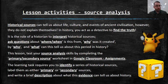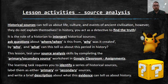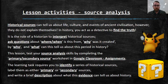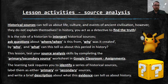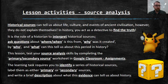I'll show you where that is in a moment. The learning task requires you to identify a series of historical sources — I've given you four examples, some primary and some secondary. You need to label each one as primary or secondary, then write a brief description — two or three sentences — about what this evidence can tell us about history. For example, what can you learn from this textbook, or from a crown from ancient Egypt?